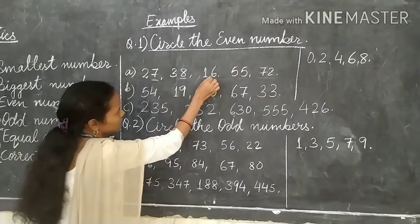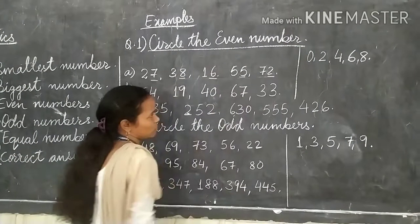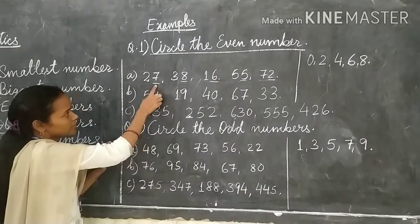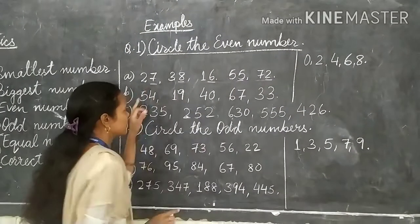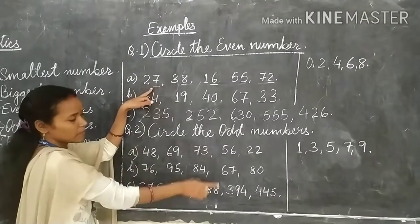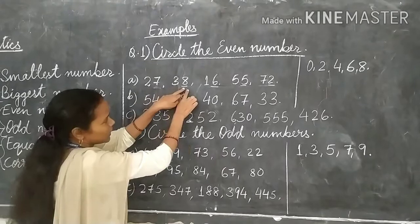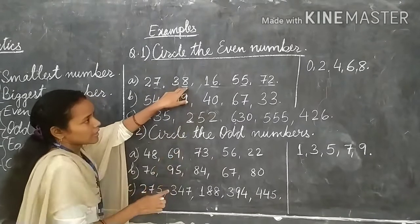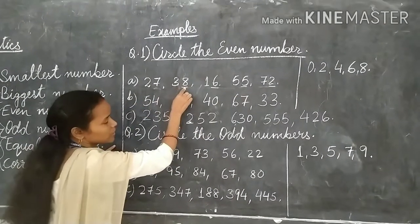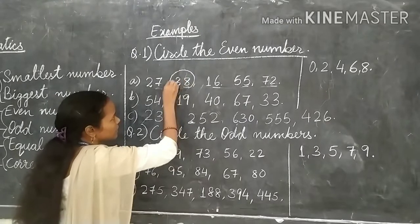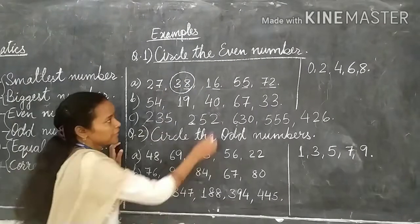In the place of 1's we have 7, 8, 6, 5, and 2. So 7 is an odd number, meaning 27 is not an even number. Now 8 — just see that 8 is there, so 38 is an even number. We will circle this even number.